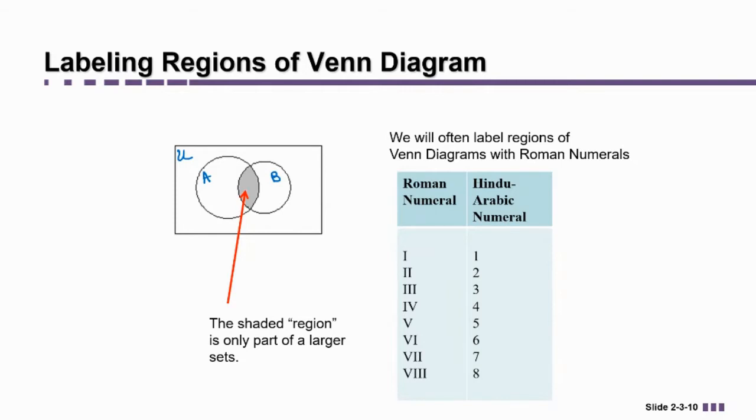So in general, when we draw a Venn diagram with two sets like this, what we're doing is creating four regions. And a lot of times I will use Roman numerals to number them. So I've listed over here the Roman numerals 1, 2, 3, 4, 5, 6, 7, and 8, just in case you're not familiar with them.